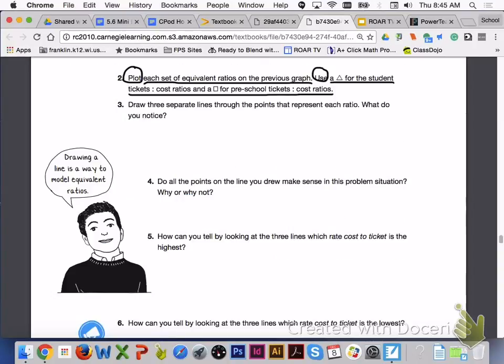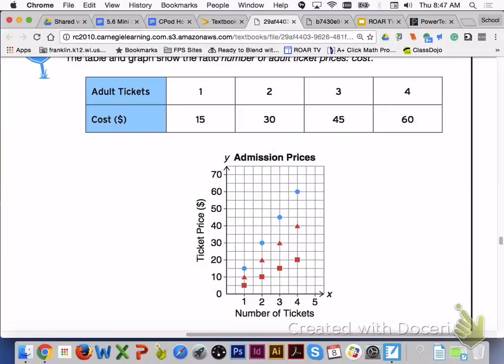Turn to page 358. Please answer number 2 with your group members. Here is what your graph should look like for number 2. We have the blue circles representing the adult tickets to cost, the red triangles representing the student tickets to cost, and the red squares representing the preschool tickets to cost.